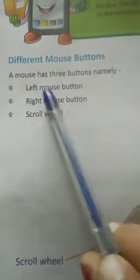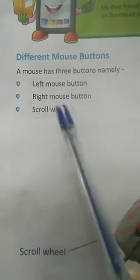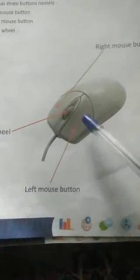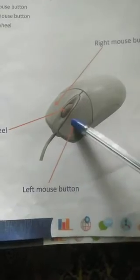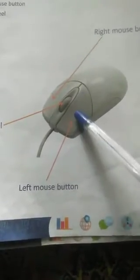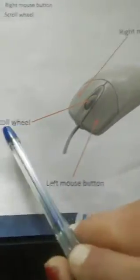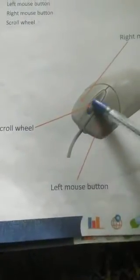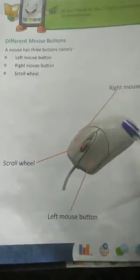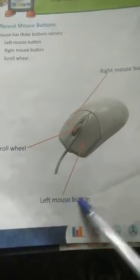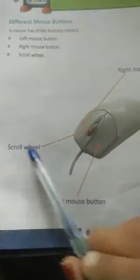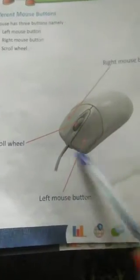So how many buttons does a mouse have? A mouse has three buttons: left mouse button, right mouse button, scroll wheel. You can see in this picture — this is a mouse. This is the left mouse button, at the left side. This is the right mouse button, on the right side. And this middle one is the scroll wheel — the scroll wheel moves. So left mouse button, right mouse button, scroll wheel — these are the three buttons of a mouse.